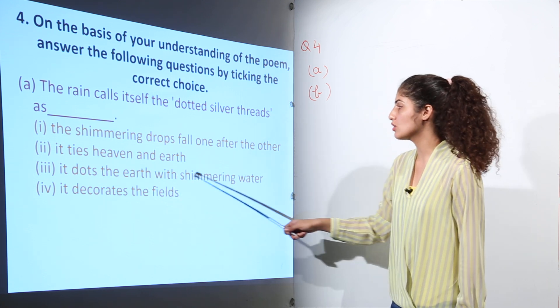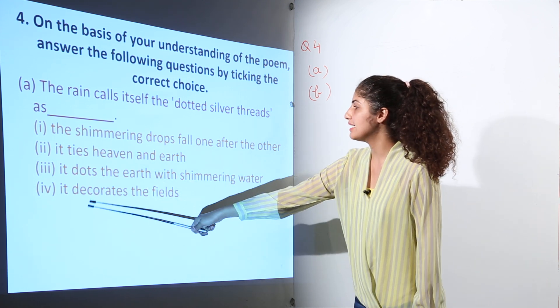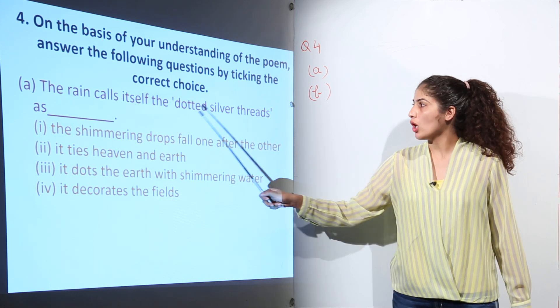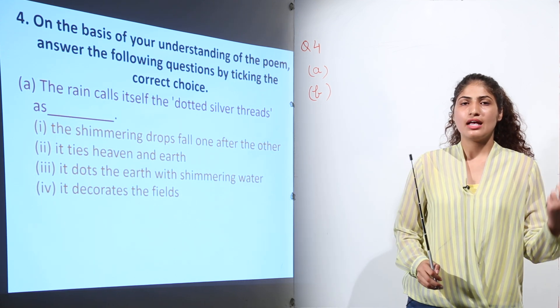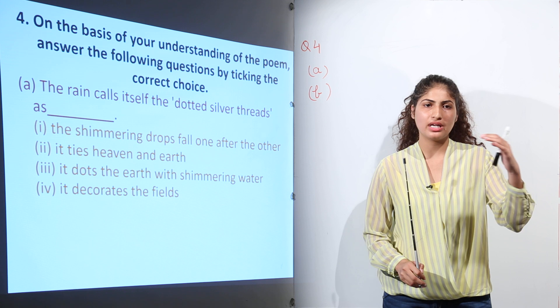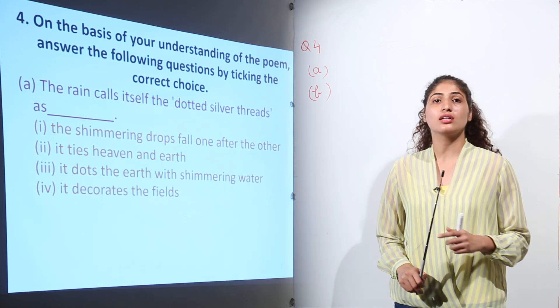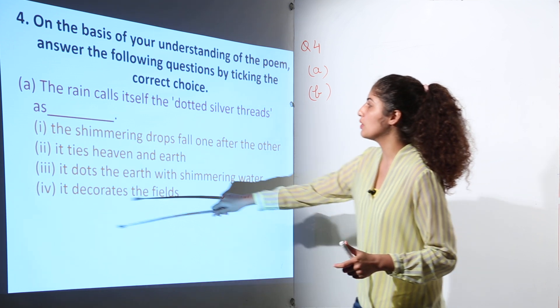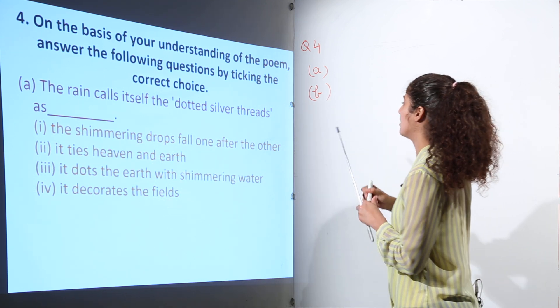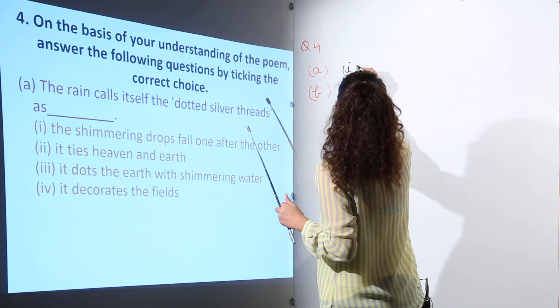(c) it dots the earth with shimmering water, (d) it decorates the fields. When the raindrops are falling one after the other, it seems as if they have made a thread. So the answer would be the shimmering drops fall one after the other. That means option one is correct.